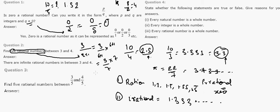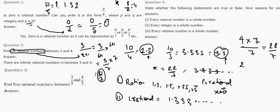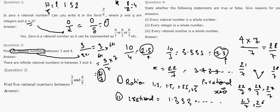So 3 becomes 21 by 7, and 4 multiplied by 7 over 7 gives 28 by 7. The 6 rational numbers between them are: 22 by 7, 23 by 7, 24 by 7, 25 by 7, 26 by 7, and 27 by 7. That gives us 6 values between 3 and 4.